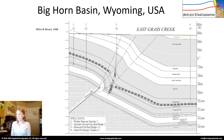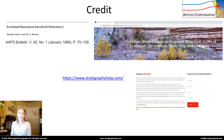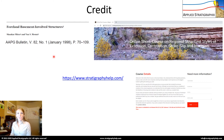Before I leave you today, I just want to make sure I give credit where credit is due. Everything I showed you today came from a paper called 'Foreland Basement Involved Structures' written by Shankar Mitra and Van Mount. Shankar Mitra was actually my advisor when I was getting my PhD. If you're interested in this course, please visit stratigraphyhelp.com where we have this course to offer as well as many others. I'm a really big fan of using lots of seismic data and lots of exercises in my course, so I hope you will reach out, sign up, and I hope to see you soon. Thank you.